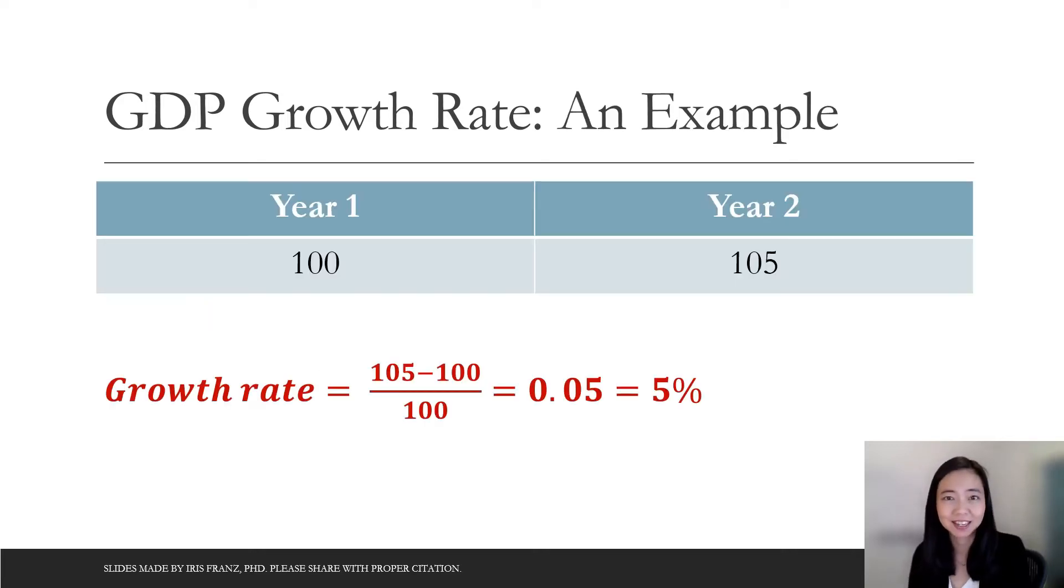For example, if we have a country whose GDP in year one was say 100 billion and in year two GDP was 105 billion, then the growth rate will be 105 minus 100 divided by 100. So that gives you 0.05 or 5% of GDP growth rate.